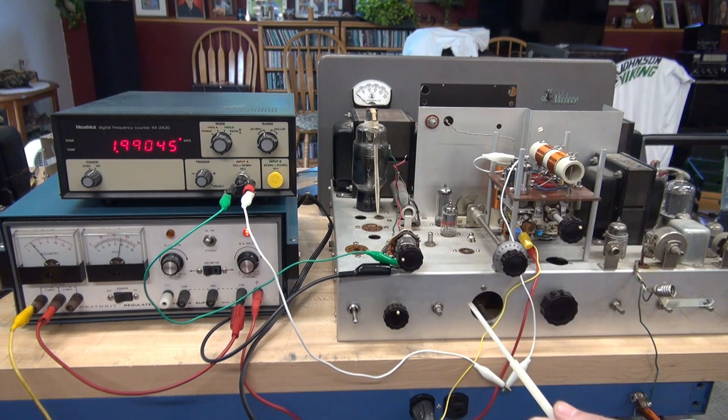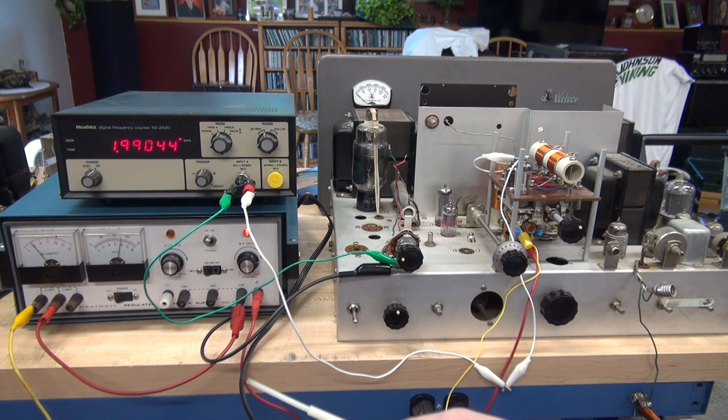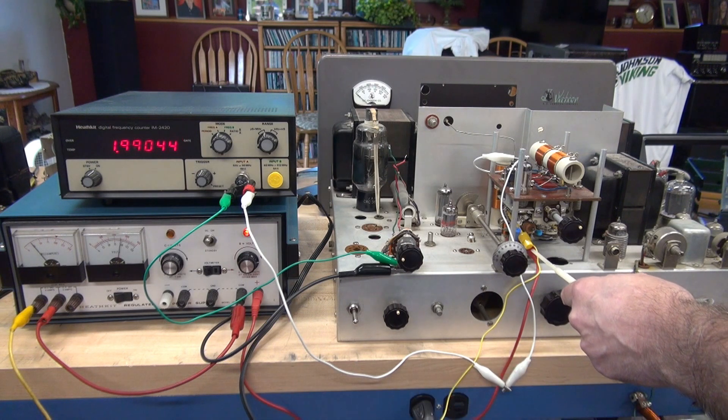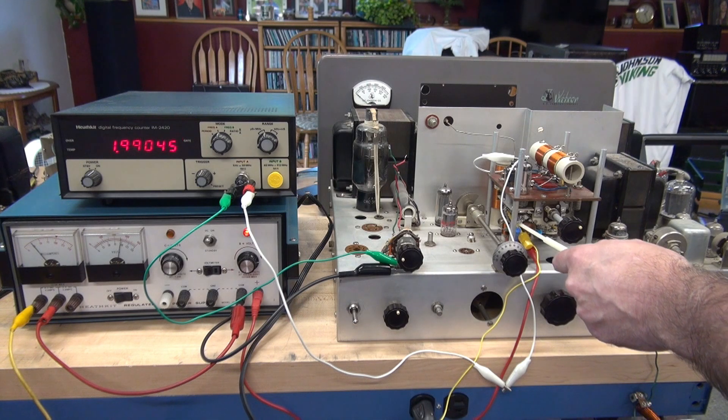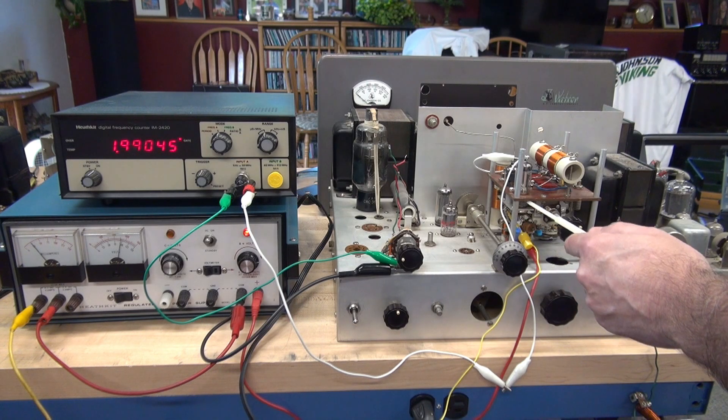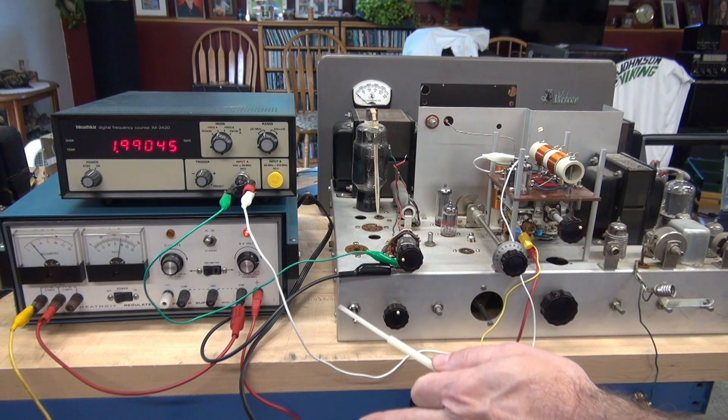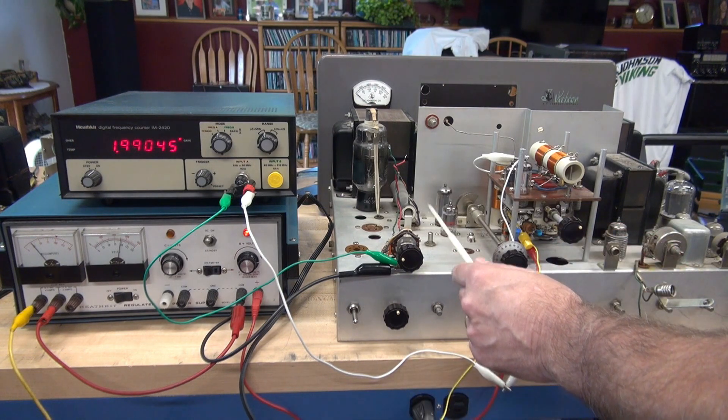Step three, we're going to connect the high voltage. So the B plus is going to go to the low side of R3, the 18K resistor, which feeds the OA2 voltage regulator. Low side is also going to go to chassis.